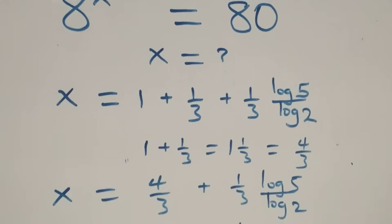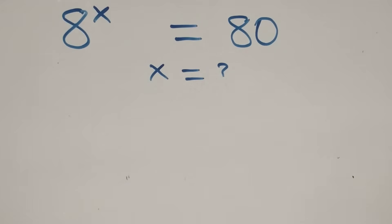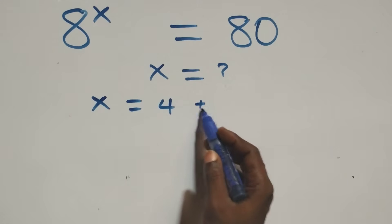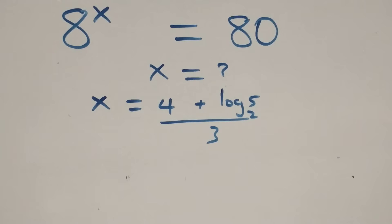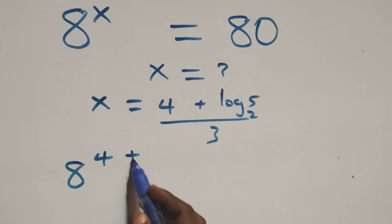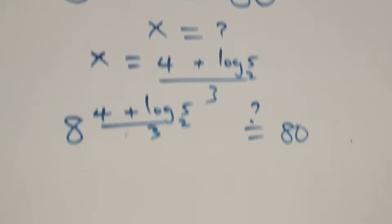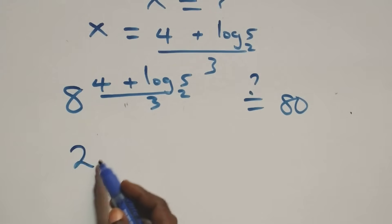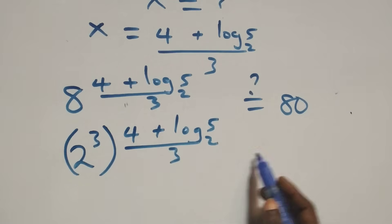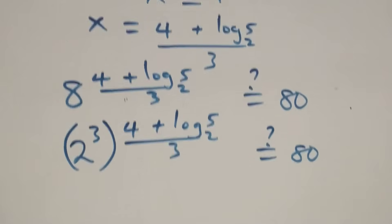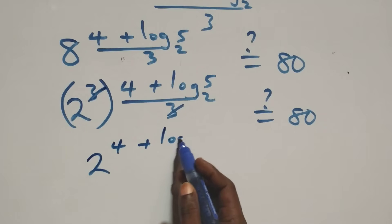Let's verify by substituting x equals (4 + log₂5) over 3 back into the original equation. We get 8 raised to power (4 + log₂5)/3 equals 80. Writing 8 as 2³, we have (2³) raised to power (4 + log₂5)/3 equals 80. The 3 in the exponent and denominator cancel each other.